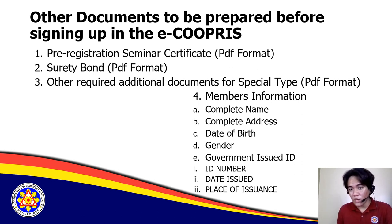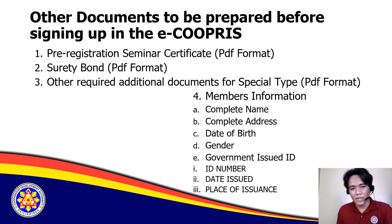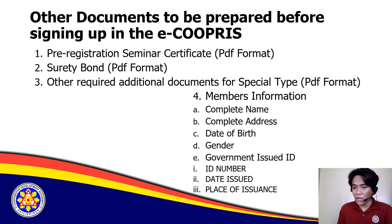Also, secure a surety bond and scan a copy of it. The surety bond is obtained from insurance companies. The amount to be bonded is your total paid-up capital plus the membership fee collected. The person to be bonded is the treasurer — and if recommended, include the chairman. Note: get a surety bond, not a fidelity bond.